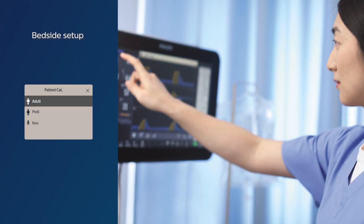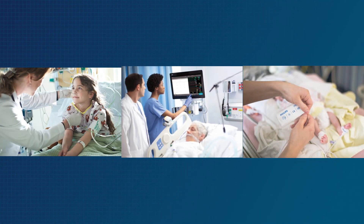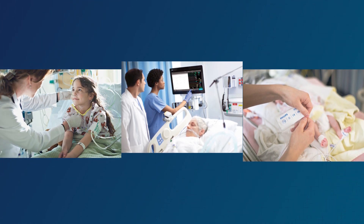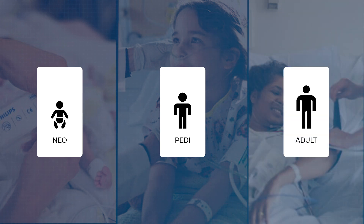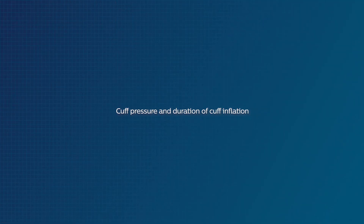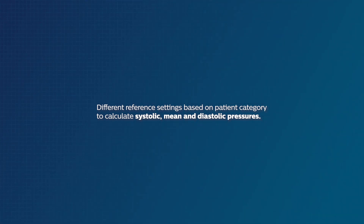Bedside setup for NIBP measurement begins with selecting the patient category for your individual patient. Ensuring patient category is set correctly is imperative because different patient safety limits are applied to neonatal, pediatric, and adult patients. These limits include the maximum cuff pressure and duration of cuff inflation. In addition, monitors use different reference settings based on patient category to calculate systolic, mean, and diastolic pressures.